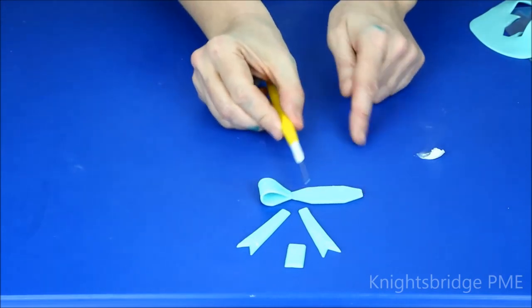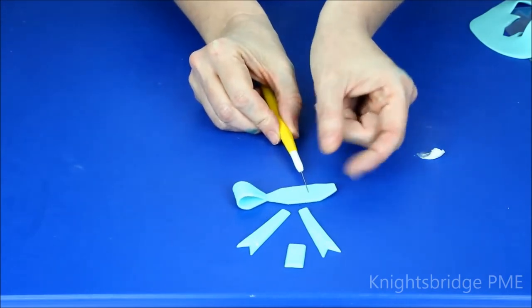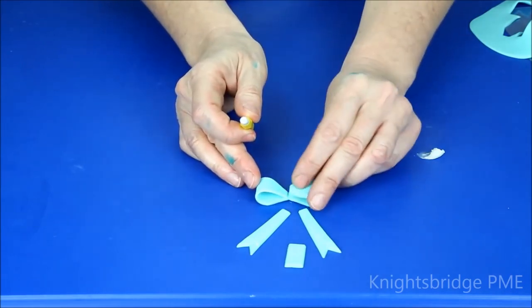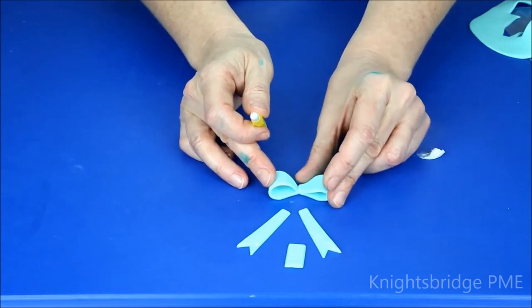And the same the other side. Then you can see straight away that's created our little bows either side, our little ribbon loops.